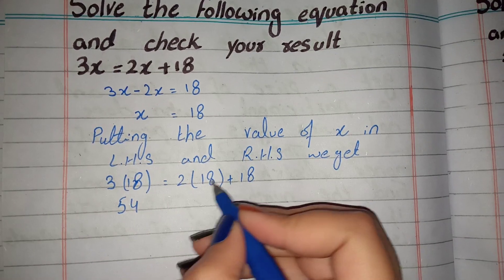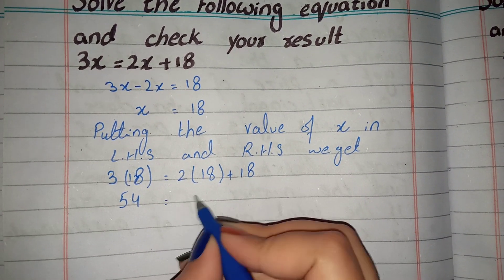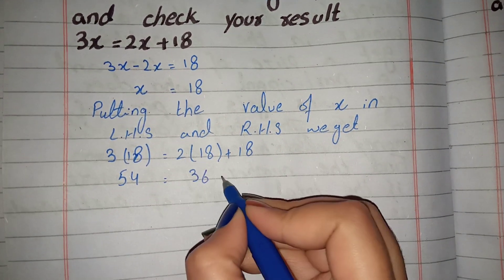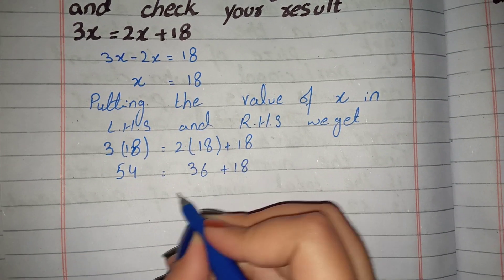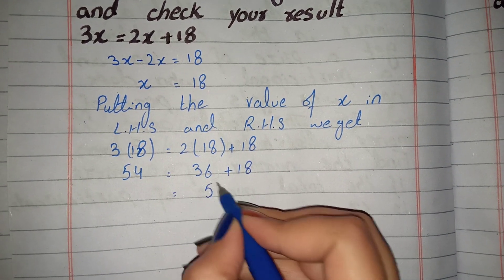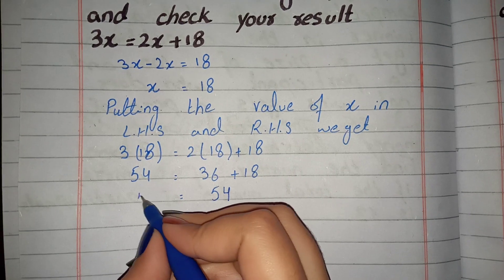We have to multiply 18 by 2 times, which is 36 plus 18. We have 54.